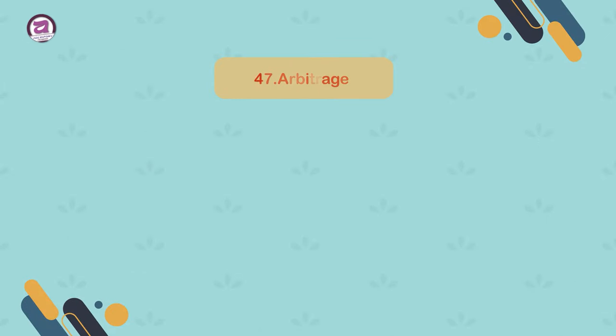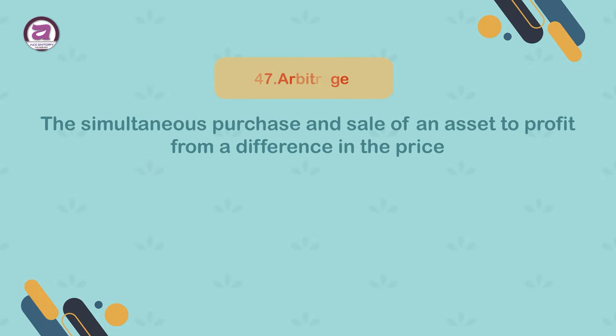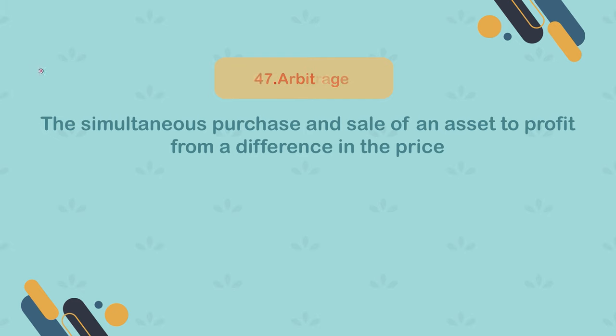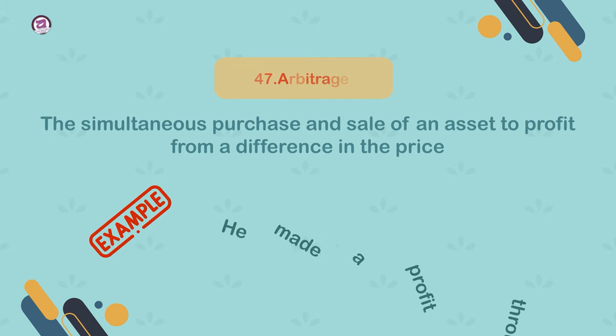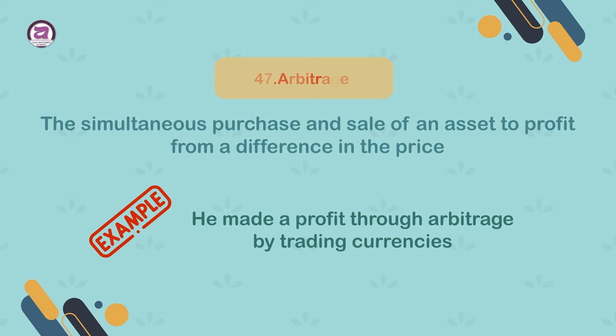47. Arbitrage. The simultaneous purchase and sale of an asset to profit from a difference in the price. Example: he made a profit through arbitrage by trading currencies.